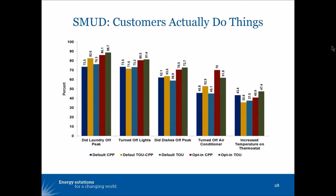What we also see in this chart is that customers who have opted into a time of use rate or critical peak price tend to take action at higher rates than customers that were defaulted onto those rate designs. Those customers were motivated to choose the time of use rate to save money or because of their ability and willingness to be flexible about when they use energy — and not surprisingly, they did so.